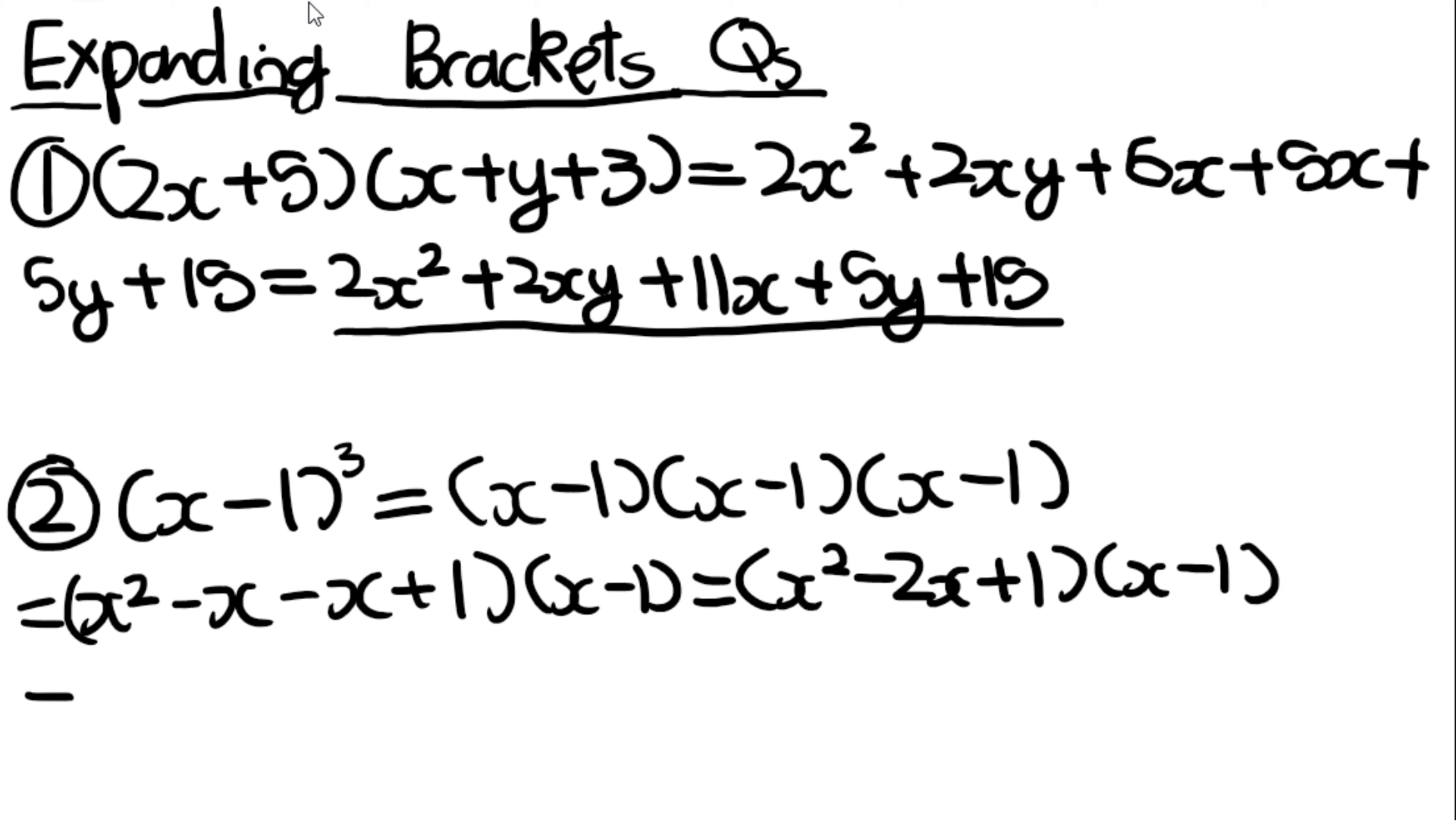And then we just expand the brackets again to do x squared times x is x to the power of 3. Minus 2x times x is minus 2x squared, 1 times x is x, minus 1 times x squared is minus x squared, minus 2x times minus 1 is plus 2x, and plus 1 times minus 1 is minus 1. And we can simplify this to do x cubed, minus 2x squared minus x squared is minus 3x squared, and then the x plus 2x would go to plus 3x, and then the minus 1 is on its own. So that's the final answer.